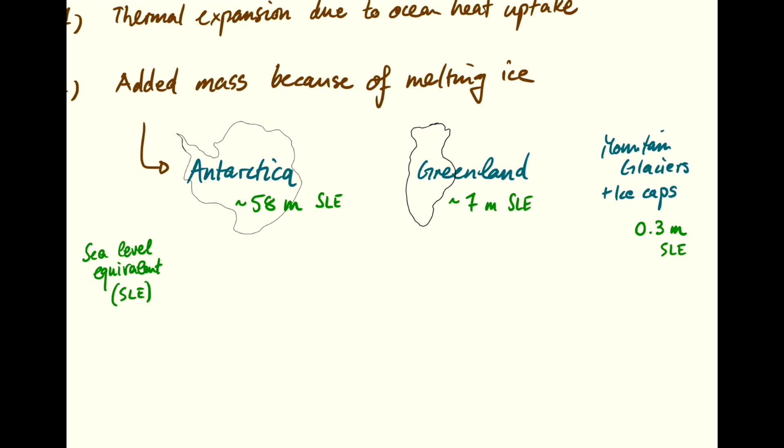Now, that gives us a total of about 65 meters, which is a very scary number. But rest assured, the vast majority of Antarctic and also of Greenland ice will remain in ice form for a long time to come.